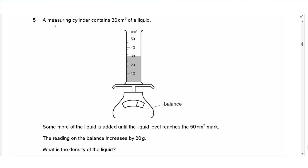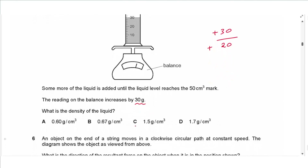Question 5: A measuring cylinder contains 30 cm³ of liquid; more is added until the level reaches 50 cm³. The balance reading increases by 30 grams. The increase in mass is 30 g and the increase in volume is 20 cm³. Density equals mass over volume: 30 divided by 20 gives 1.5 grams per centimeter cubed.